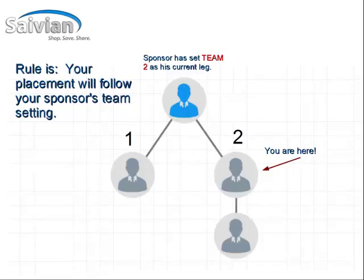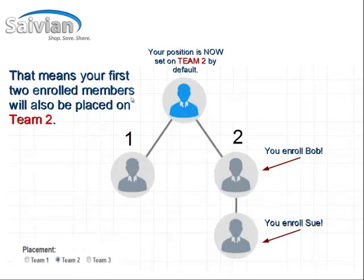So in this case, if the sponsor has set their team setting to Team 2 as their current leg and they sponsor you, you are going to be placed right below them on their Team 2, because that's the leg they were set on. Now that you're on their Team 2, your first enrolled members are also going to be placed on your Team 2 to keep it consistent — almost like building a binary or dual team compensation plan. So your position is now set on Team 2 by default.